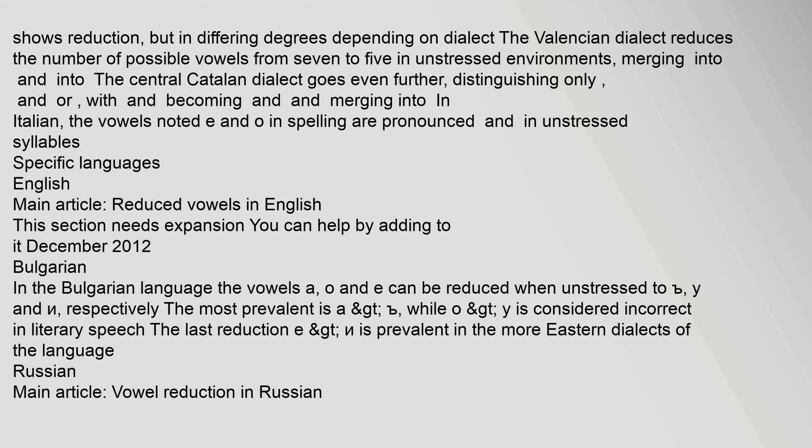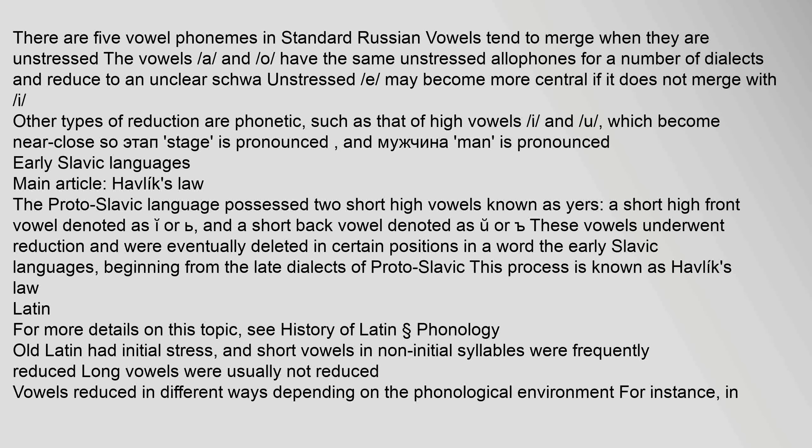Specific languages — English: reduced vowels in English is a topic that needs further expansion. Bulgarian: in the Bulgarian language, the vowels /a/, /o/, and /e/ can be reduced when unstressed to /u/ and /i/ respectively; the most prevalent is the reduction of /a/. Russian: there are five vowel phonemes in standard Russian; vowels tend to merge when unstressed. The vowels /a/ and /o/ share the same unstressed allophones in a number of dialects and are reduced to an unclear schwa. Unstressed /e/ may become more central if it does not merge with /i/. High vowels /i/ and /u/ become near-close in reduction.